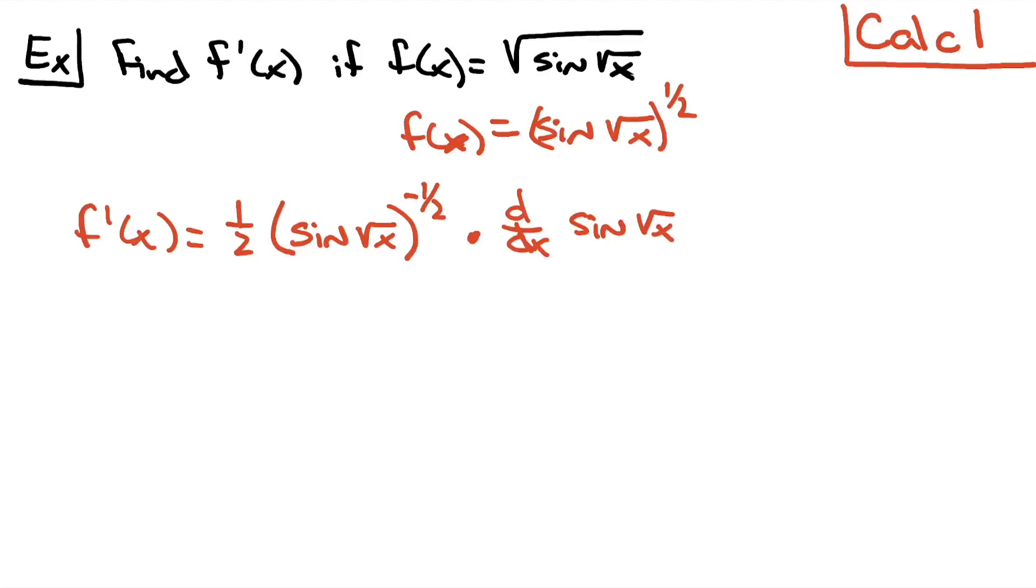Now what this is, is taking that derivative of the outside function here, and then leaving the inside function alone, multiplying it times the derivative of the inside.